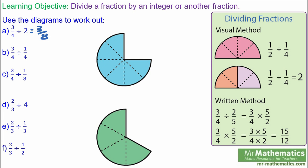Now we've got three quarters divided by one quarter. So we want to see how many quarters go into three quarters, and you can see three do. So three quarters divided by a quarter is simply three.